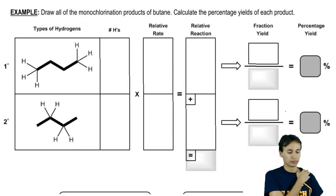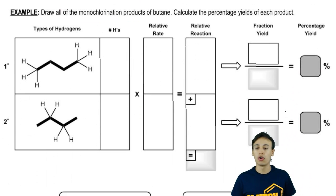All right, guys. Let's go through this question. It says, Draw all of the monochlorination products of butane and calculate the percentage yields of each product.